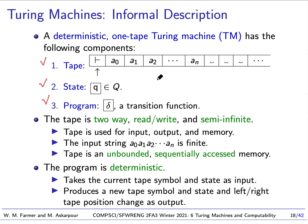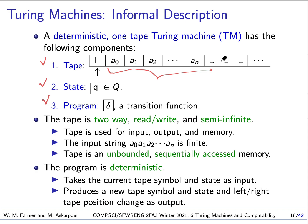This tape is two-way, read-write, semi-infinite. Two-way means we can move back and forth in either direction. We can read symbols and we can write symbols, and it's semi-infinite in the sense that there's no end if we go to the right. The input string is always going to be a finite string. At any given moment in the processing of the machine, it will hold a finite string followed by an infinite set of blank symbols. So the tape is unbounded sequentially accessed memory — unbounded means we can have as much memory as we want, and sequentially accessed means we get to any point by moving steps left or right.